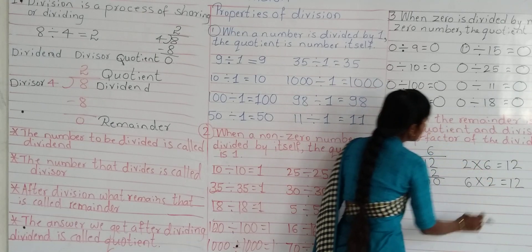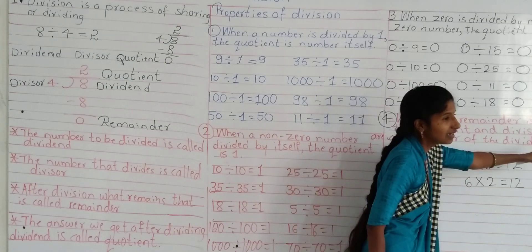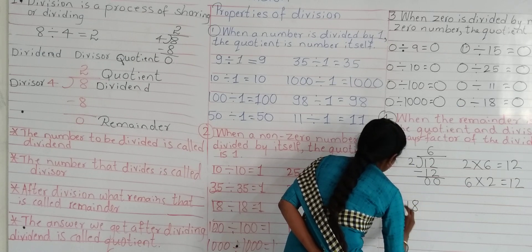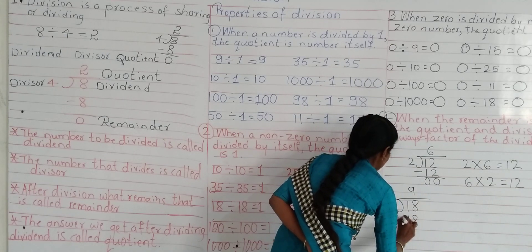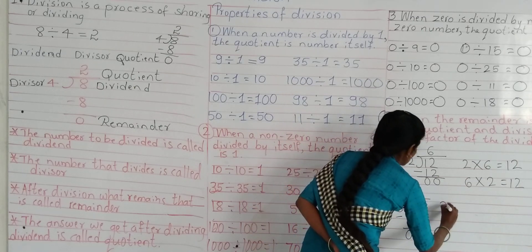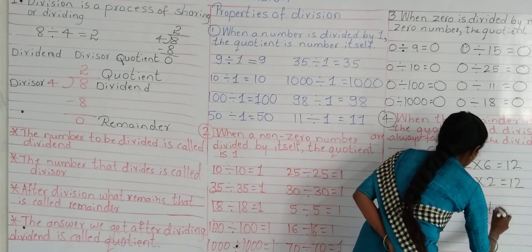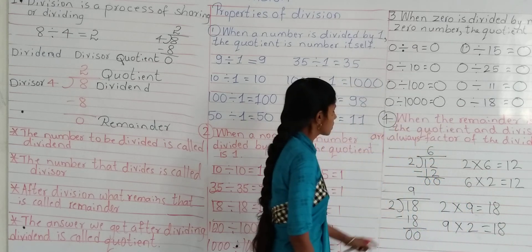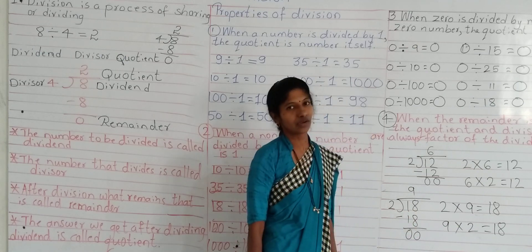So here the divisor and quotient are the factors of the dividend. In multiplication terms, 6 is the first factor, 2 is the second factor, and 12 is the product — which is the dividend in our division problem. Let's take one more example: 18 divided by 2. 2 nines are 18, so the quotient is 9. Therefore 2 and 9 are factors of the dividend 18.